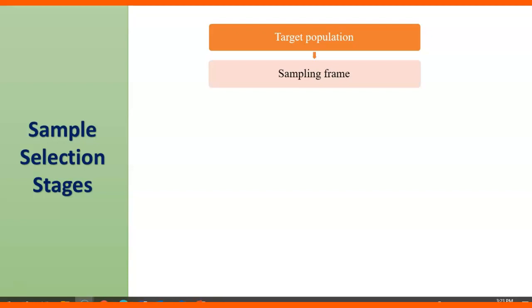Here comes sample selection stages. The very first step in sample selection is identification of target population. A sampling frame is the source material from which we will draw a sample.